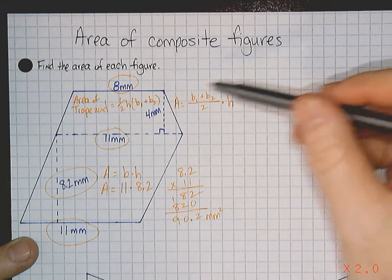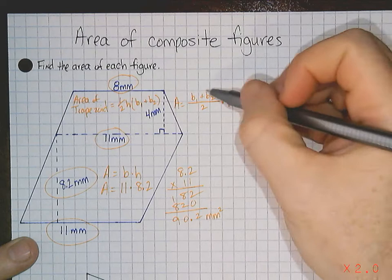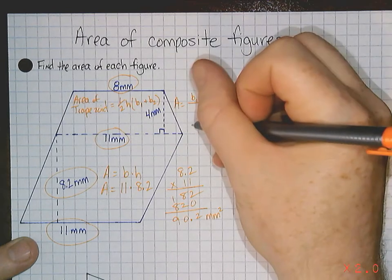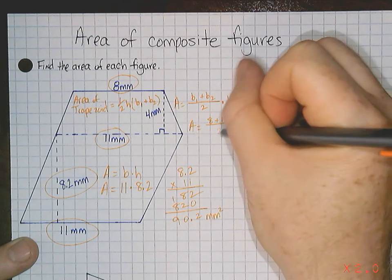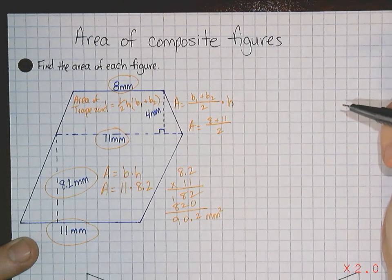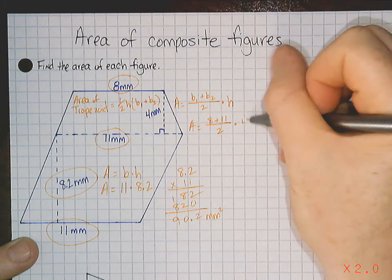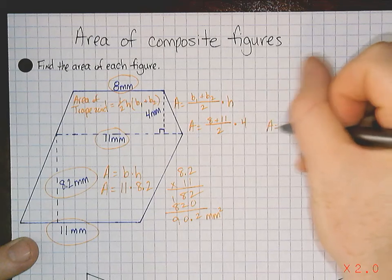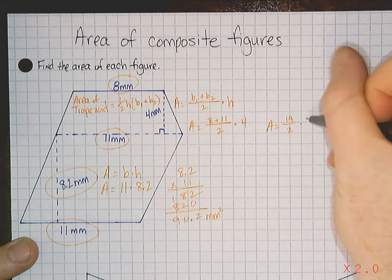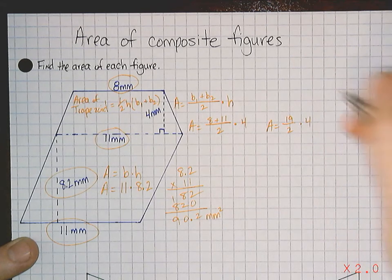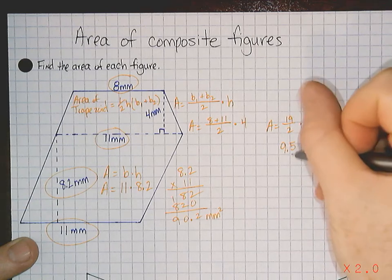Now let's figure out the trapezoid. We've got 8 and 11, so I'm going to add those together first. Area equals 8 plus 11, divide that by 2, then times it by the height, which is 4. Area equals 19 divided by 2 times 4. 19 divided by 2 equals 9.5, times that by 4.